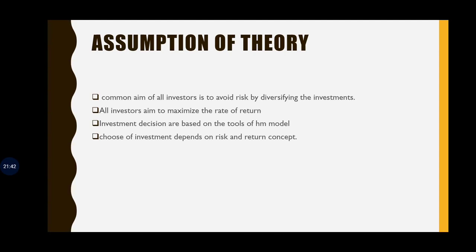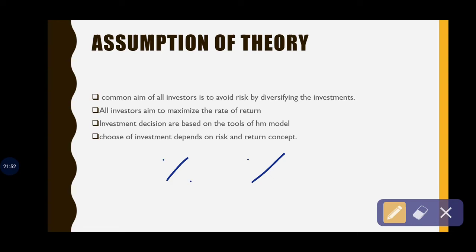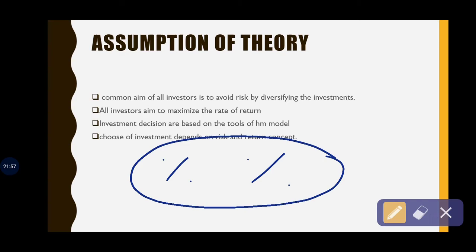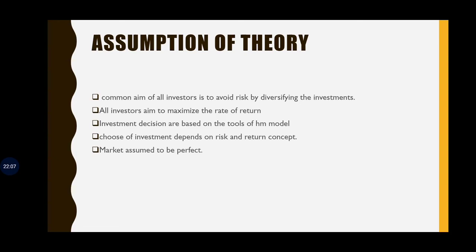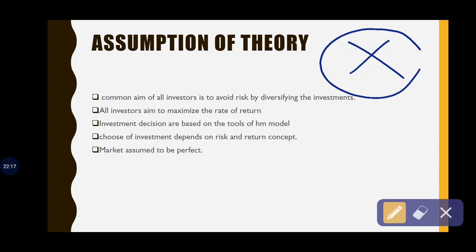Fourth assumption: the choice of investment depends on the risk and return concept — comparing the percentages of risk and return to guide decisions. Fifth assumption: the market is assumed to be perfect, meaning there is no taxation in the market and everyone is free to trade — that is a perfect market.